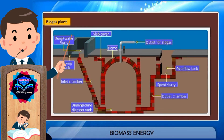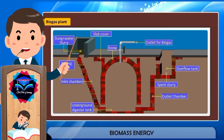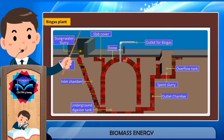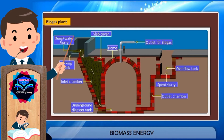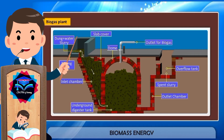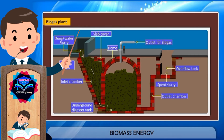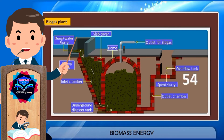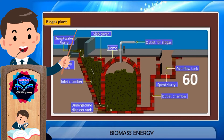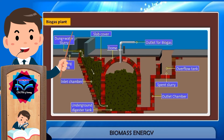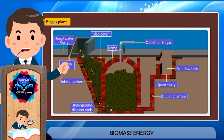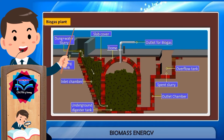Cow dung and water are mixed in equal proportions in the mixing tank to prepare the slurry. The slurry of dung and water is fed into the digester tank through the inlet chamber. The digester tank is filled with dung slurry up to the cylindrical level, with the dome left free for the collection of biogas. It takes about 50 to 60 days for a new gas plant to become operative.